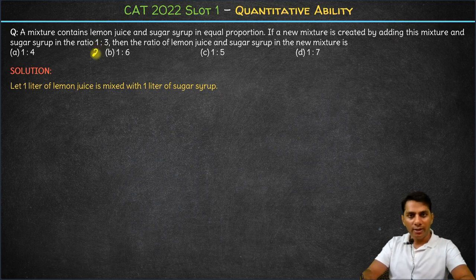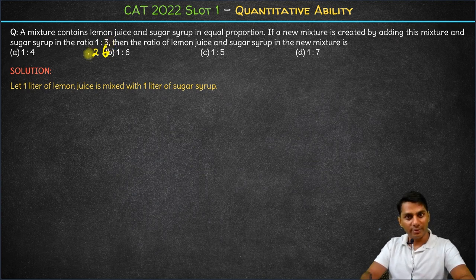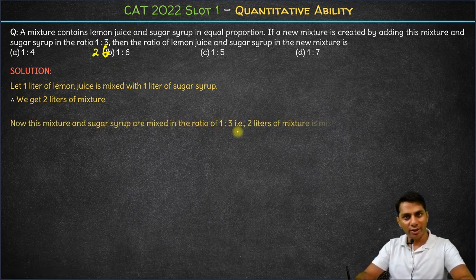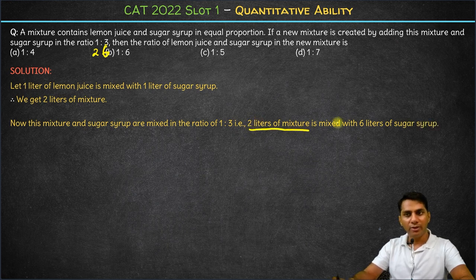So if 2 liters of the mixture is mixed, then we'll be mixing 6 liters of the sugar syrup because the ratio of quantities has to be 1 is to 3. That means 2 liters of the mixture is going to be mixed with 6 liters of sugar syrup.